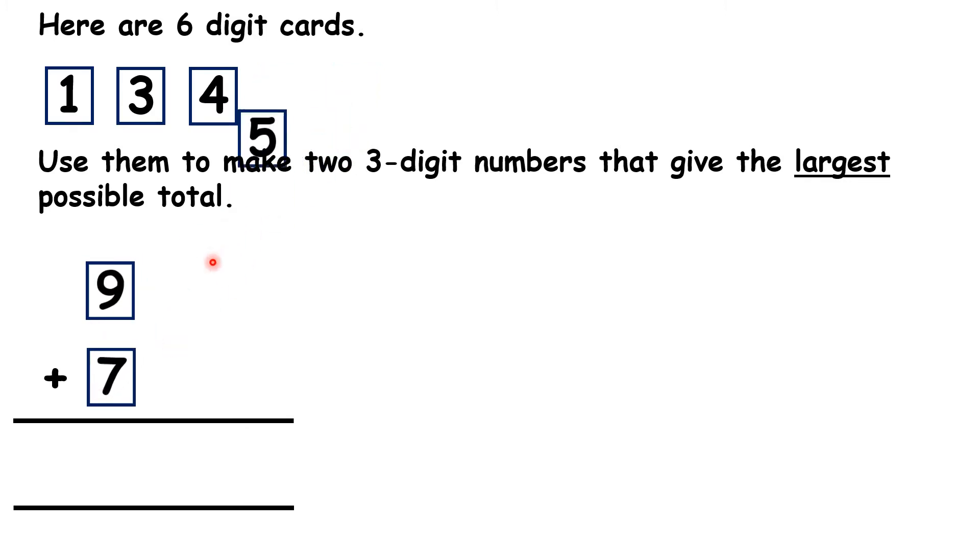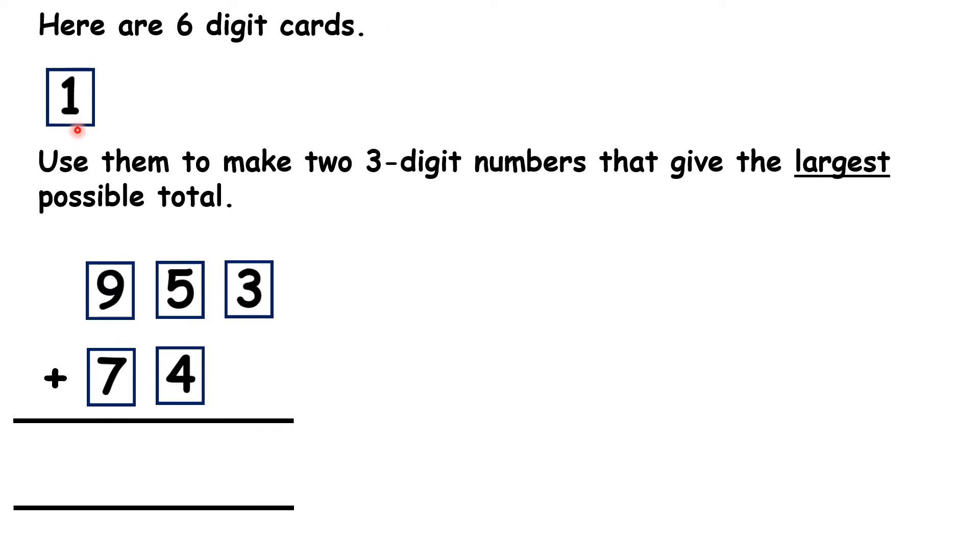The middle digits, so the 5 and the 4, can go in our tens column. And that means we have the smaller digits, so we have the 3 and the 1 in our units column.